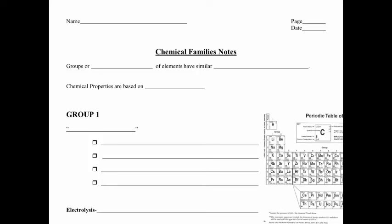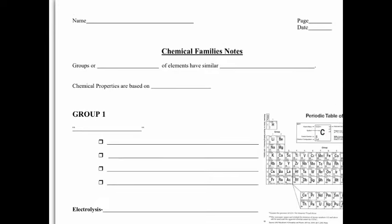To start off with on your handout, the first blank there, groups or, and I've already used this word a couple of times, sometimes we call them families. So it means the same thing, interchangeable terms. And why we group them together into these families is because they have similar chemical properties.